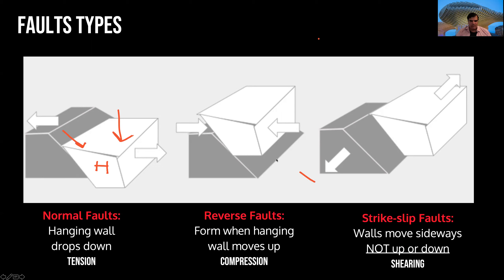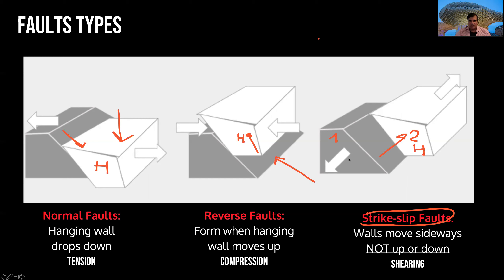But when there is a force that pushes — not gravity — then the hanging wall edge is moving up. And we have the strike-slip fault when the movement is lateral. We have one wall and another wall here, and this wall is the hanging wall. It will move to one side and the other will move to the other side.